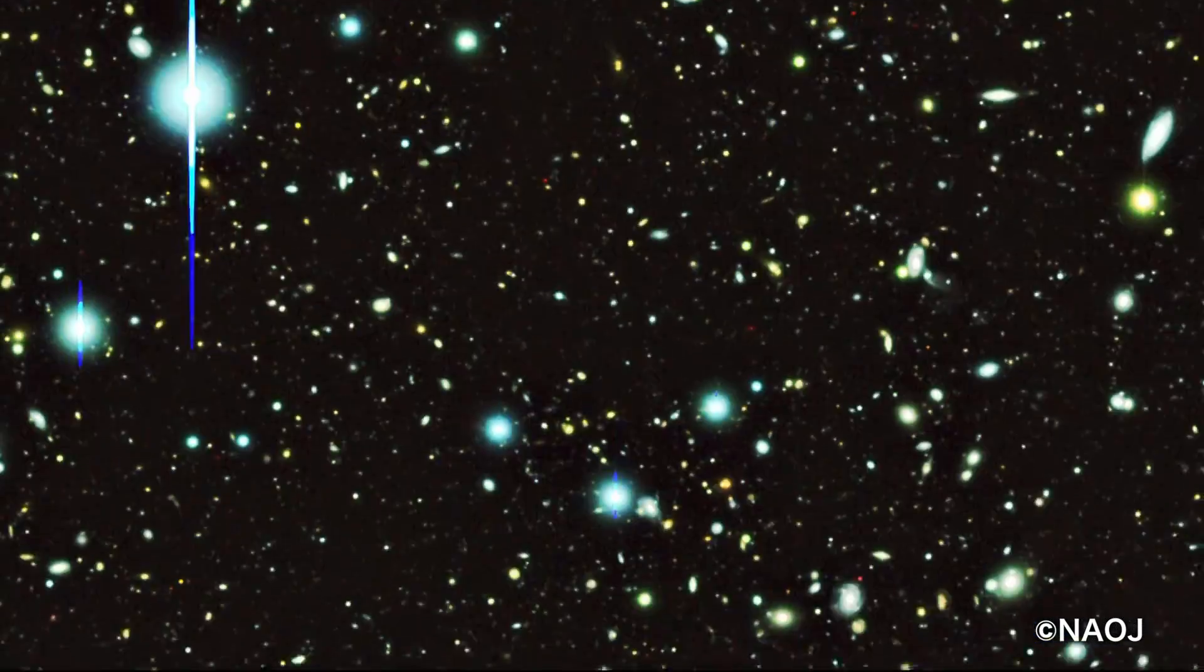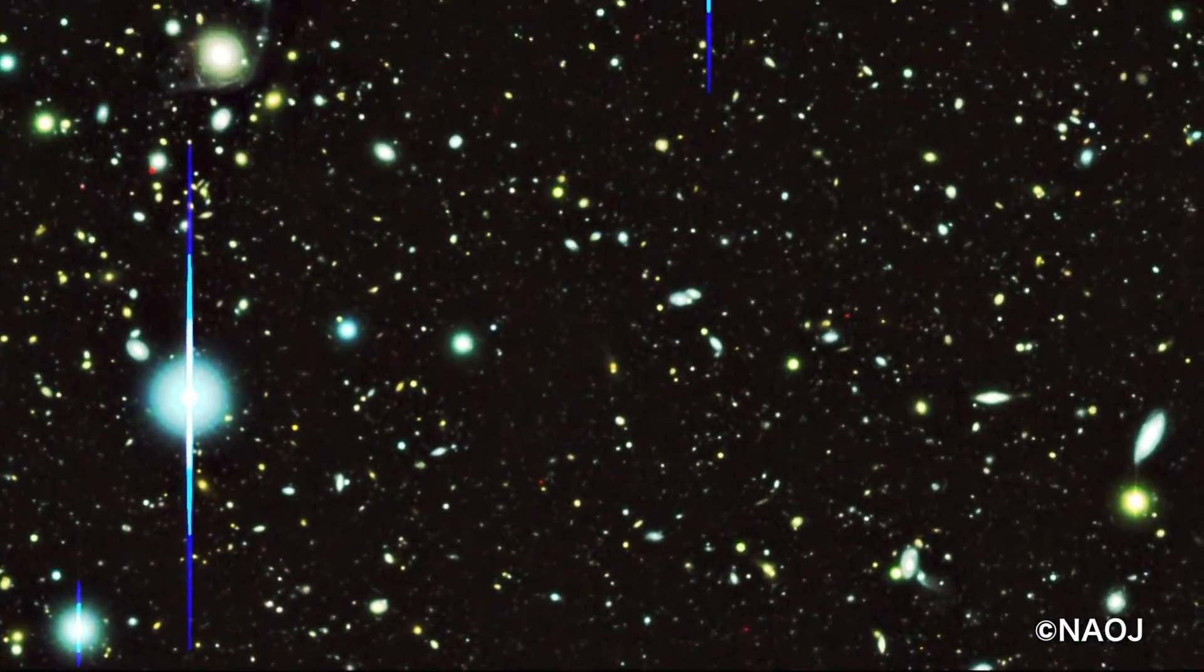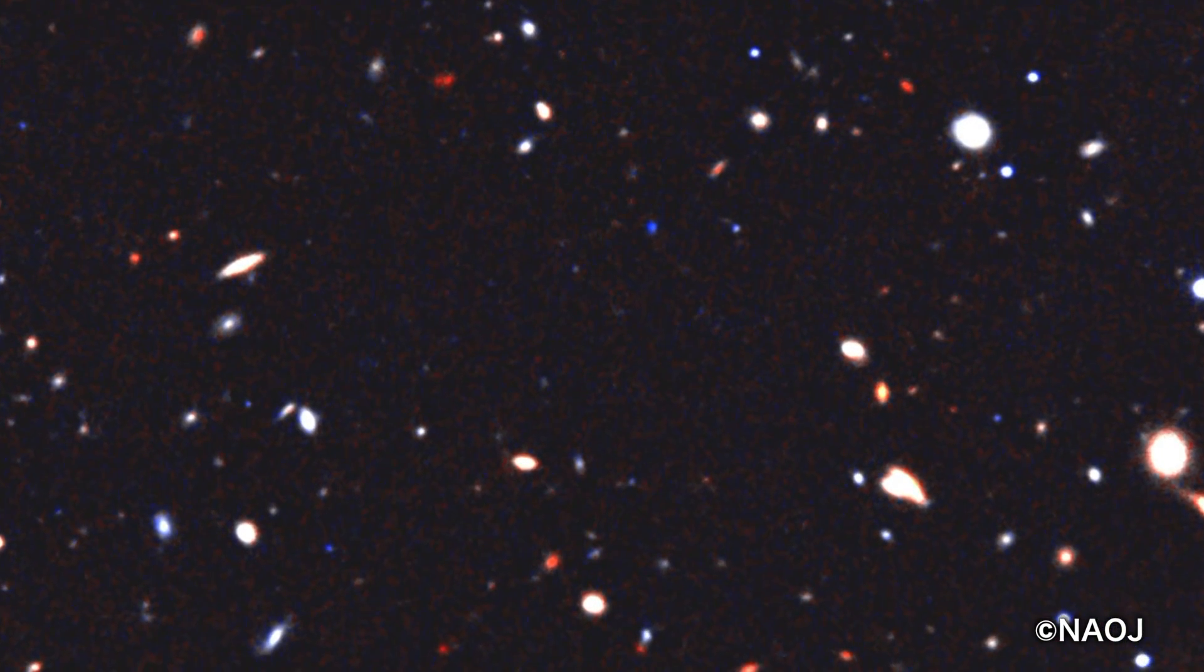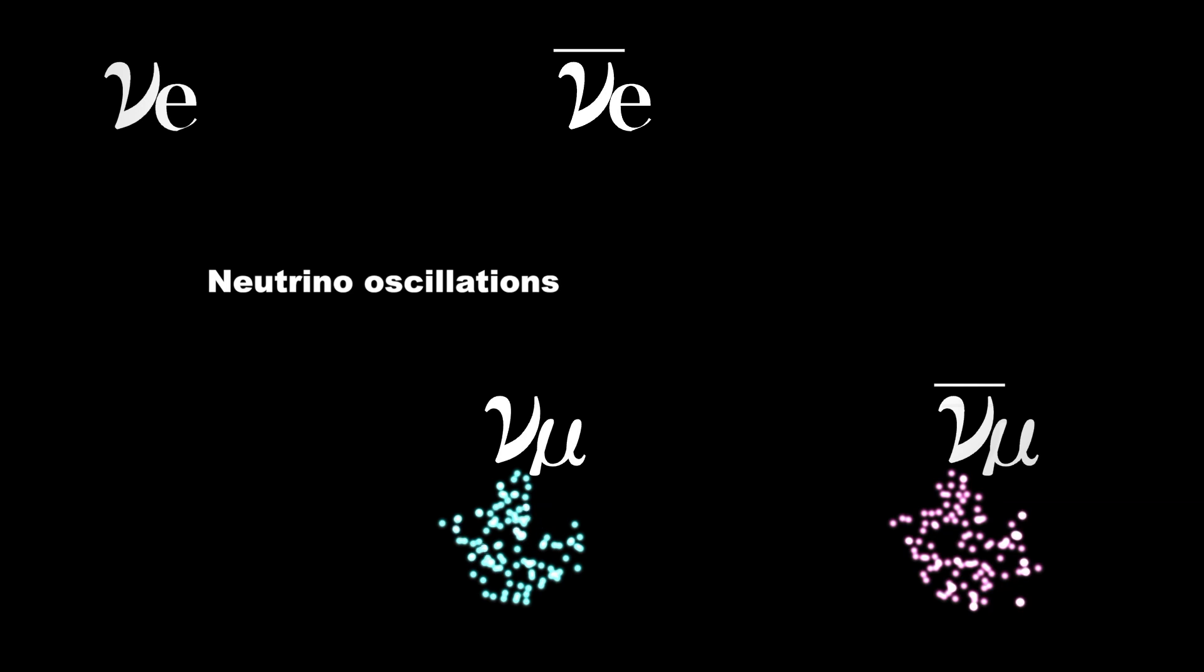Why there is matter left over, the matter that everything is made of, is one of the most fundamental questions about the universe we live in. If we find a difference in oscillations between neutrinos and anti-neutrinos, it will provide an essential clue about the evolution of the universe as we know it.